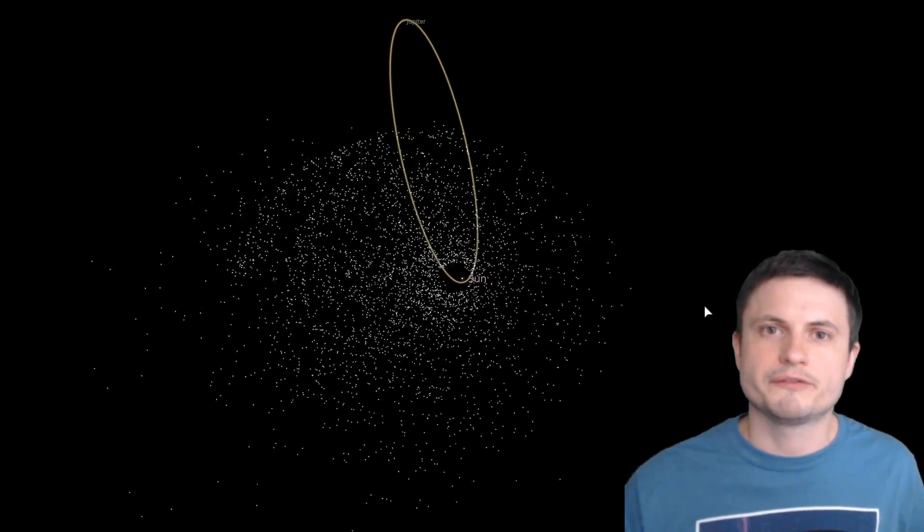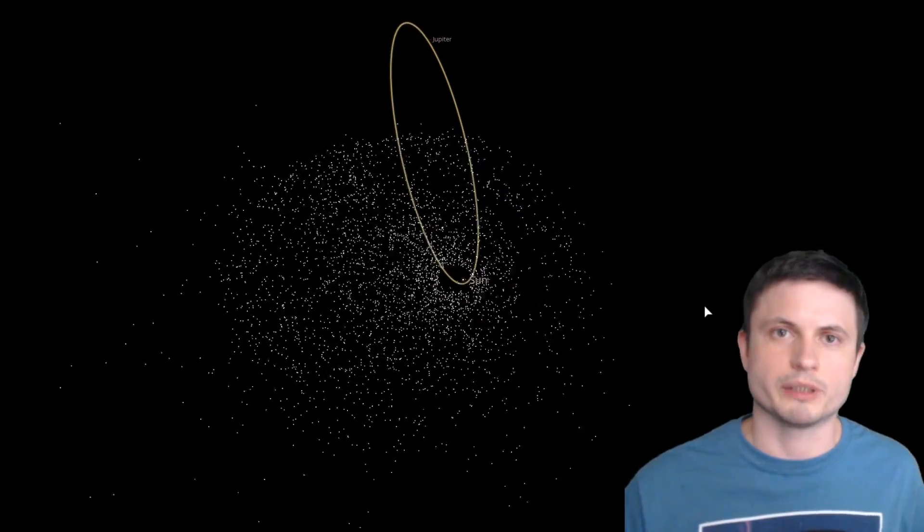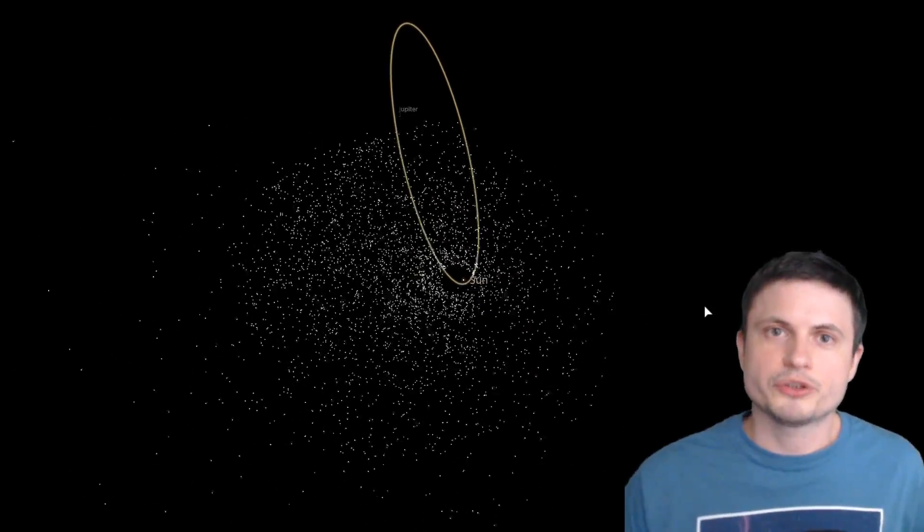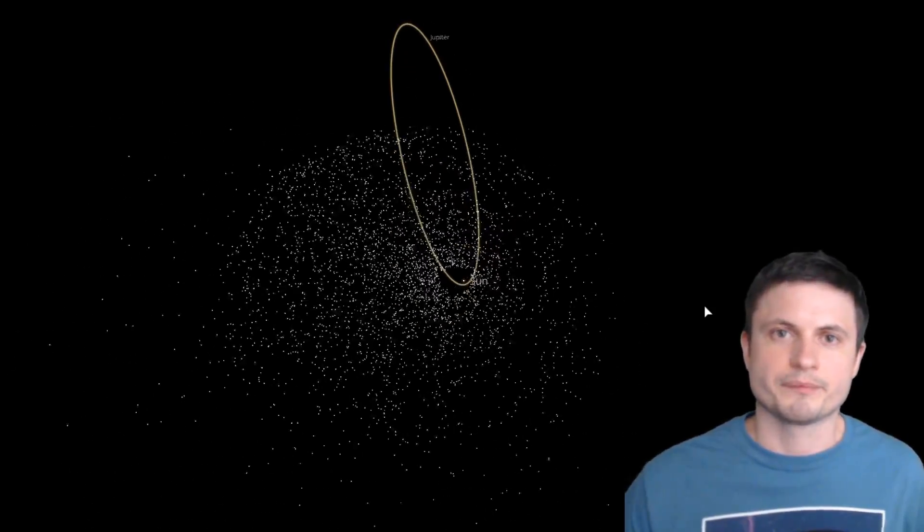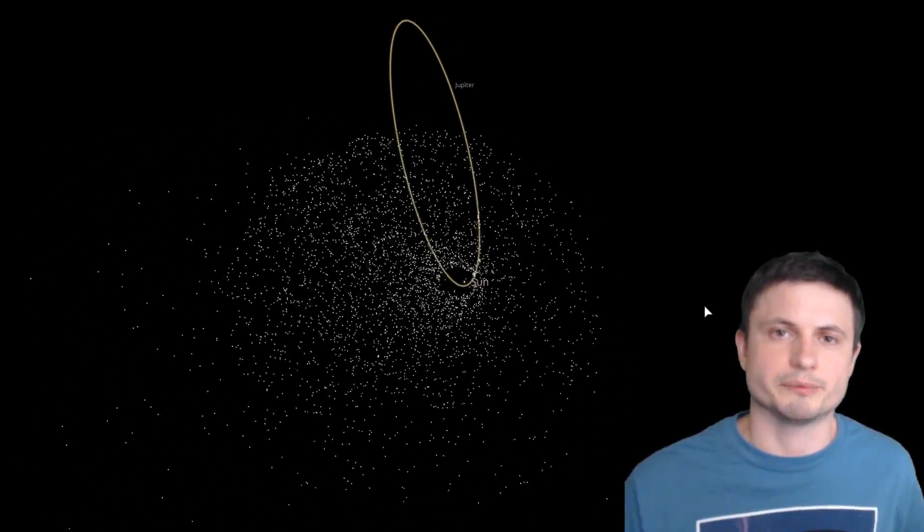And because we've discovered so many different systems that have these eccentric Jupiters or Jupiter-like objects orbiting around the parent star, it's important to understand what happens in them. Most importantly, of course, because we want to find any terrestrial objects in these systems.